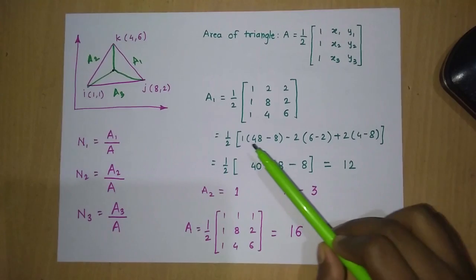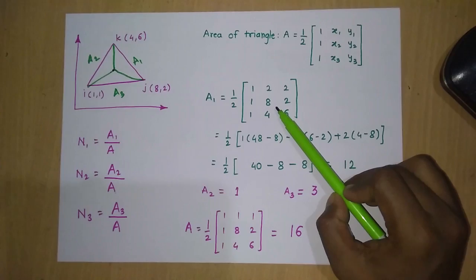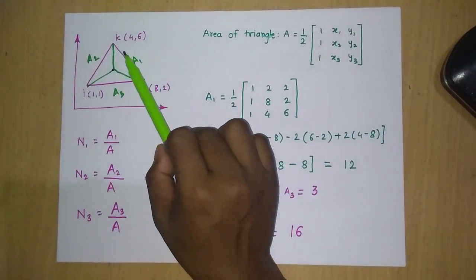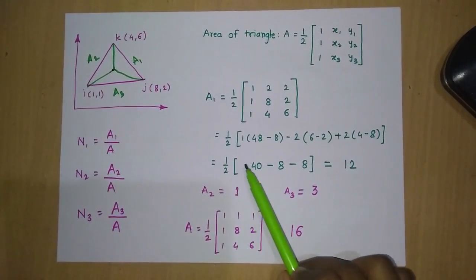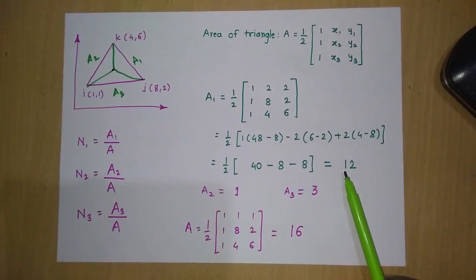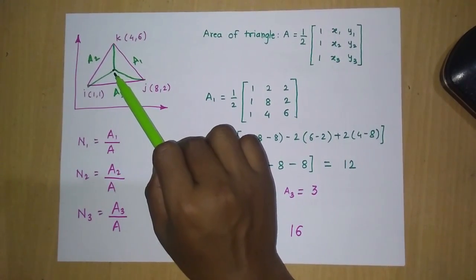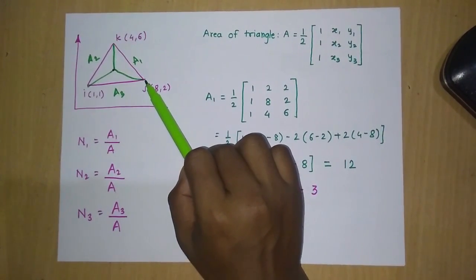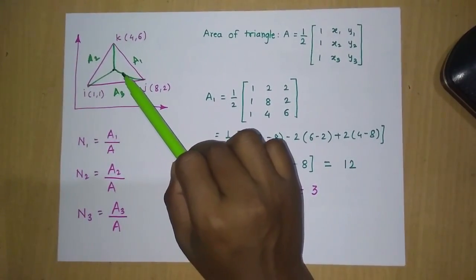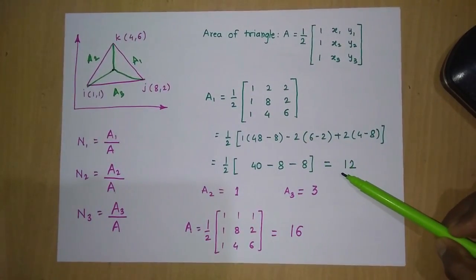Here is a small trick for calculating the area: always take the coordinates in anti-clockwise direction, so you don't get a negative answer, since area is never negative. For all sub-triangles, start from point P and go anti-clockwise. If that doesn't work, just interchange the coordinates to get a positive area.